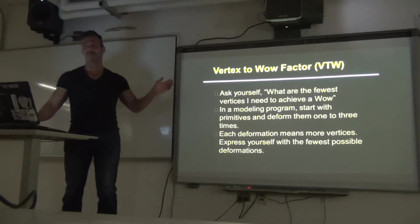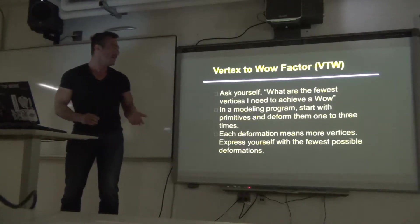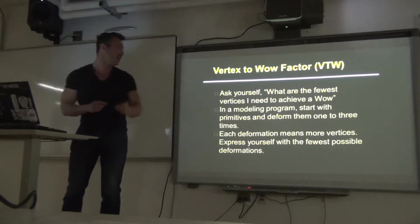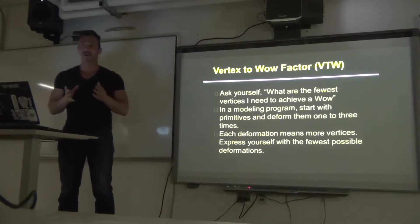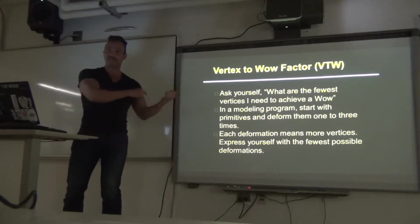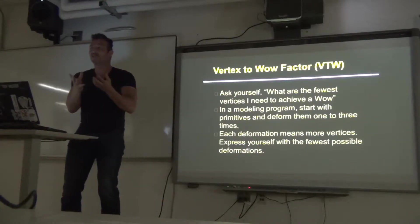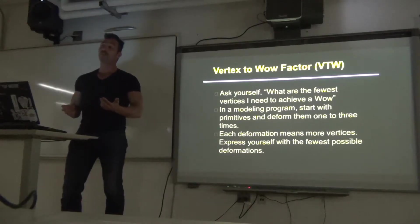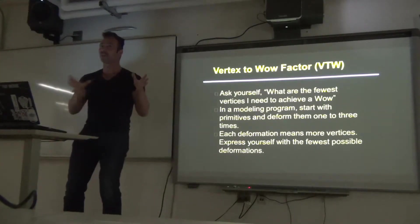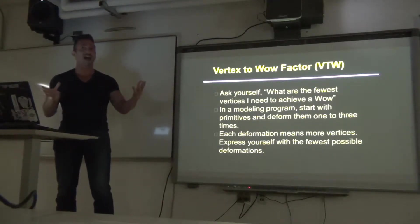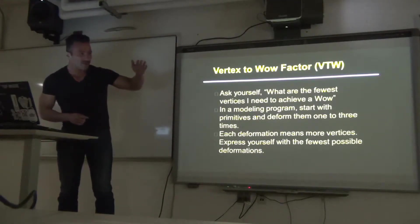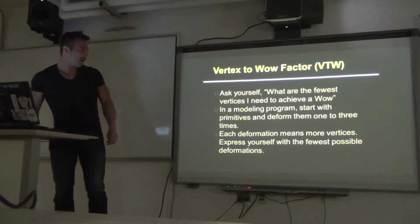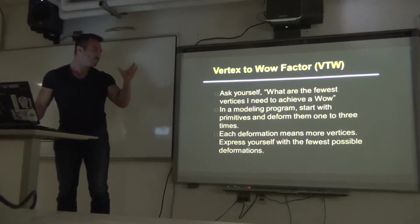I call this the VTW — the vertex to wow factor. Ask yourself: what are the fewest vertices I need to achieve a wow? If I want someone to say wow, can I do that with only eight points deformed in cool ways? You want to minimize the number of vertices. Start with primitives and deform them one to three times — just do a couple of moves on them — and these become the shapes you work with in the game.